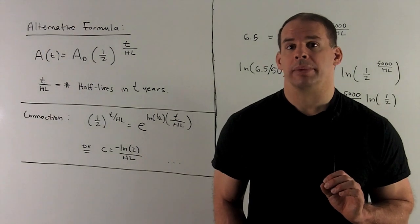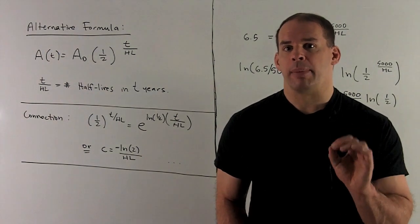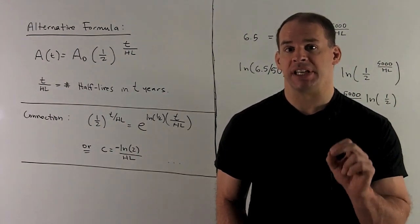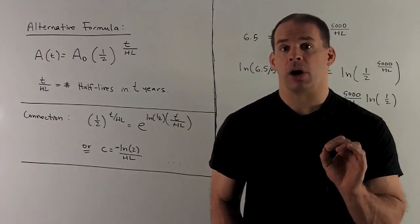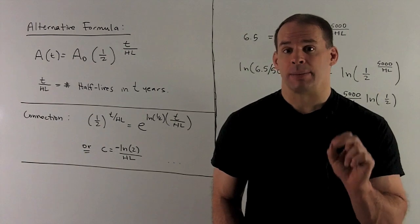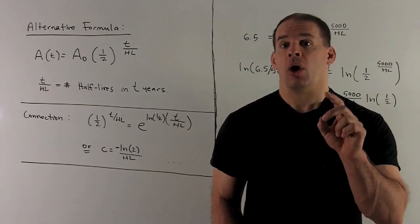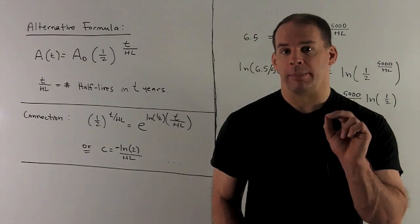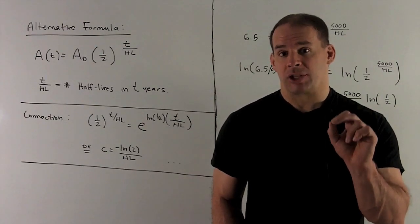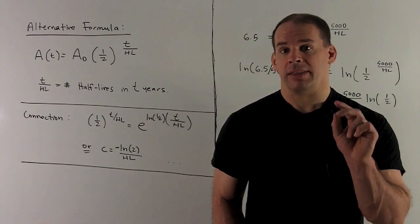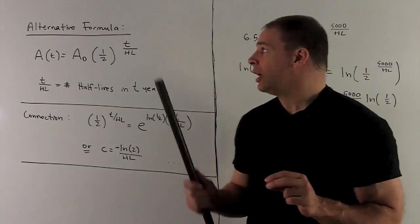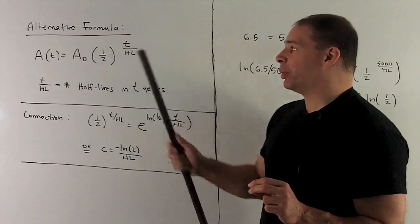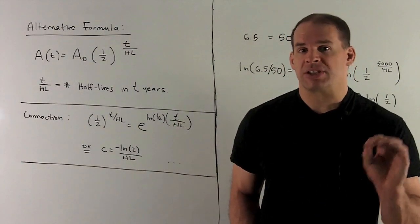Here's another look at the problem. You may have memorized the formula for radioactive decay as A of t equals A-zero times one-half to the t over the half-life. This is a little bit more natural to think about than the usual exponential decay formula. In this case, the exponent is just counting the number of half-lives.